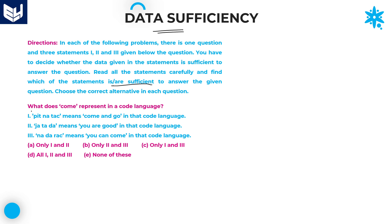Let's see the first question. What does 'cum' represent in a code language? This problem belongs to coding and decoding — you want to find the code for 'cum'. For these kinds of problems, it is better to go with the option verification method.